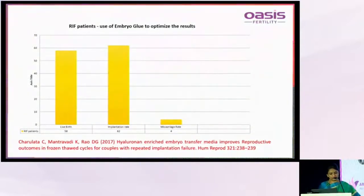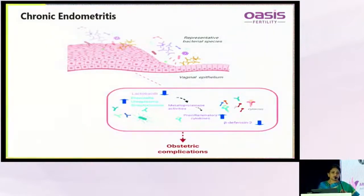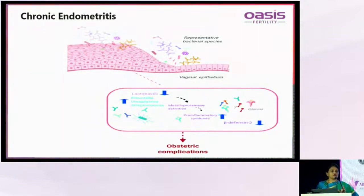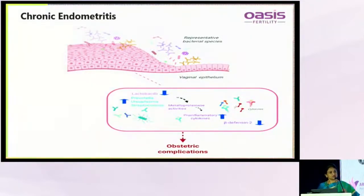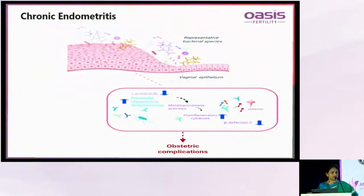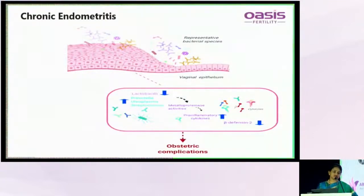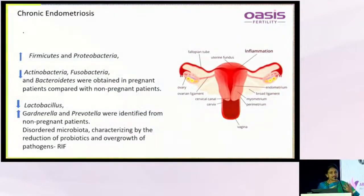Embryo glue has shown advantages — our study showed it improved implantation in women with recurrent implantation failures and also reduced miscarriage rates. Chronic endometritis has emerged in the last 3–4 years as a cause of recurrent implantation failures. Diagnosis requires hysteroscopy, histopathology, and immunohistochemistry combined — it is not an easy diagnosis, but if left untreated, pregnancy rates will definitely be low.